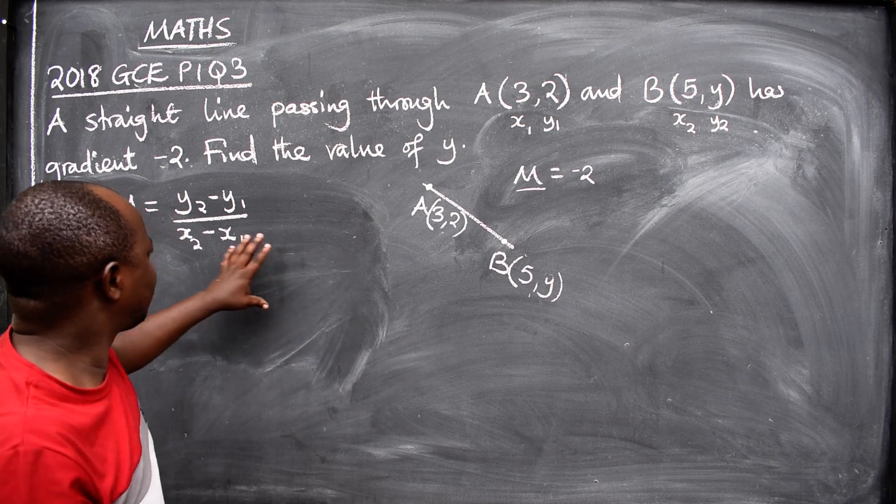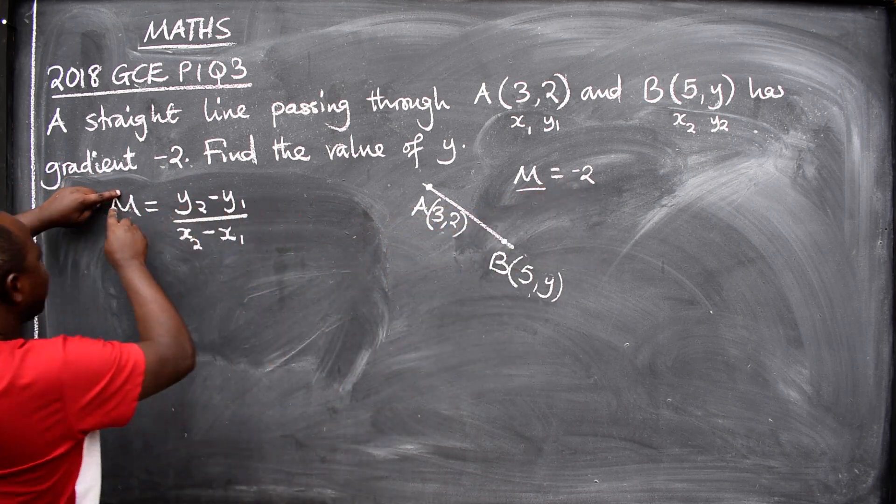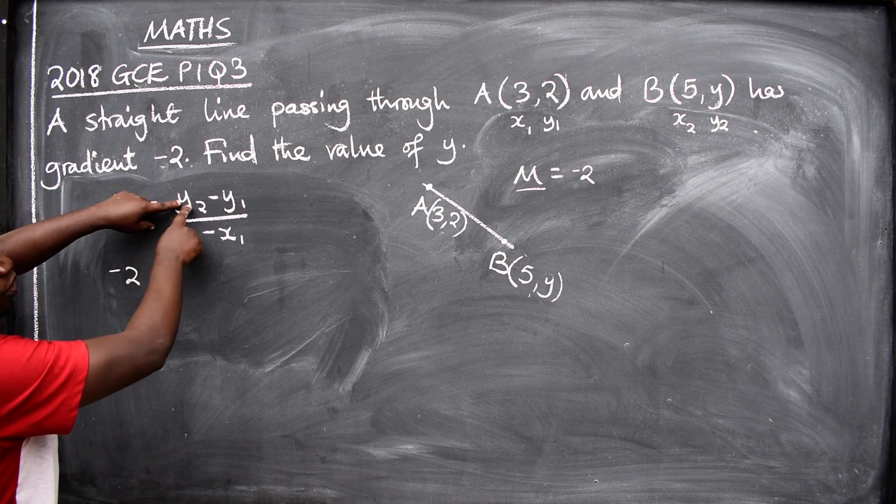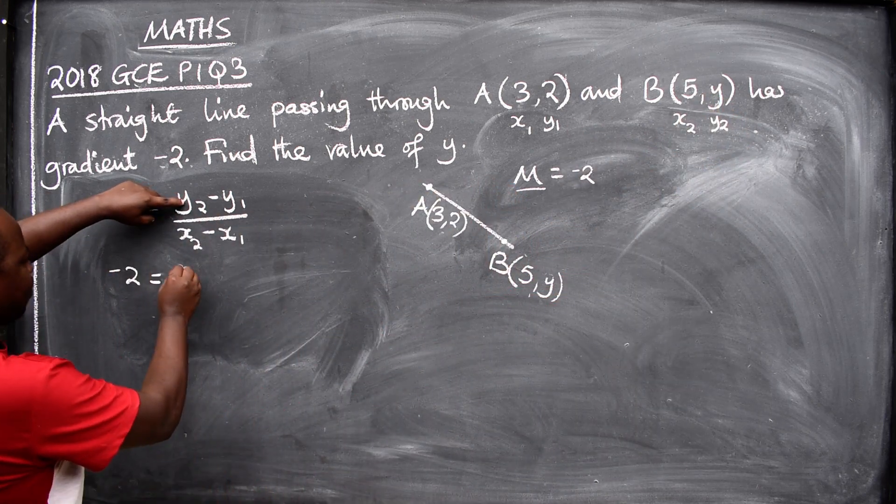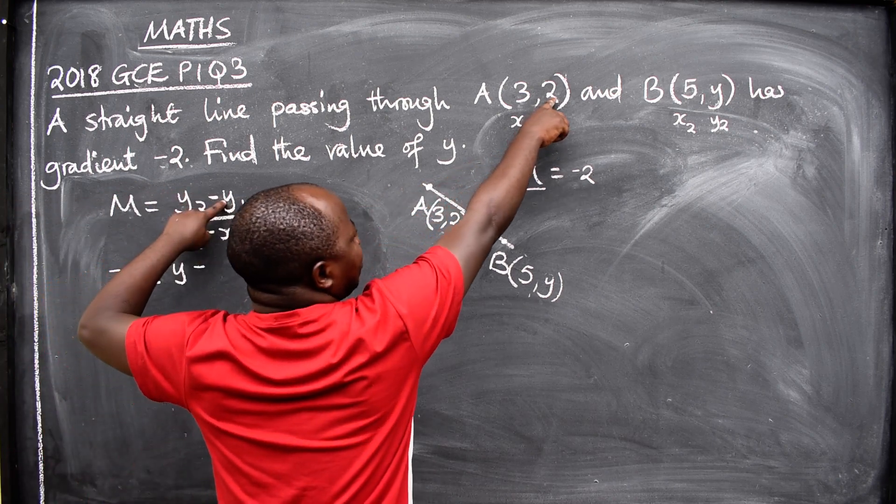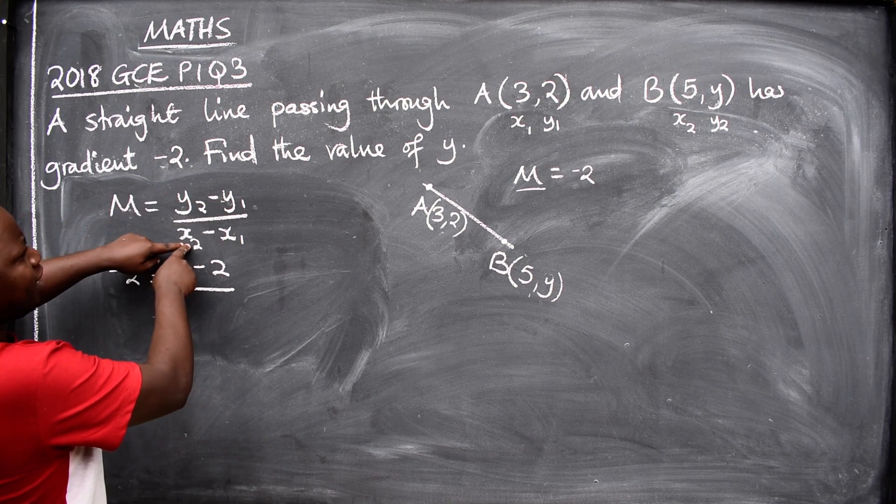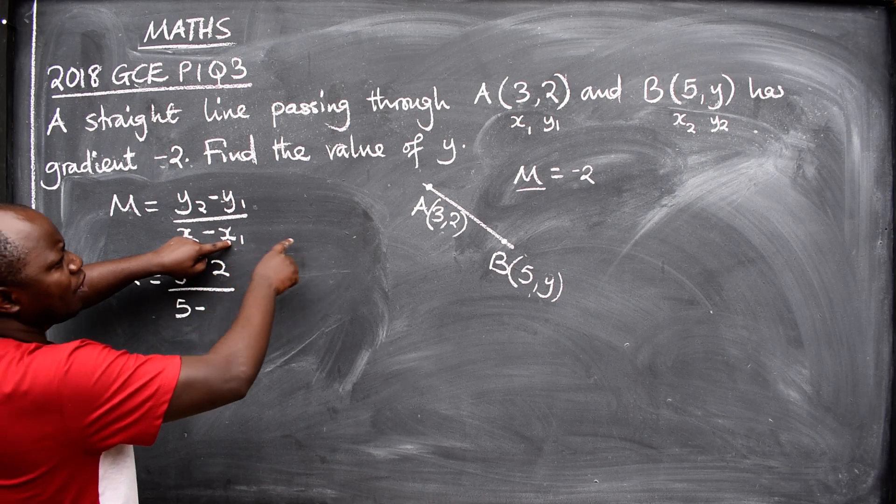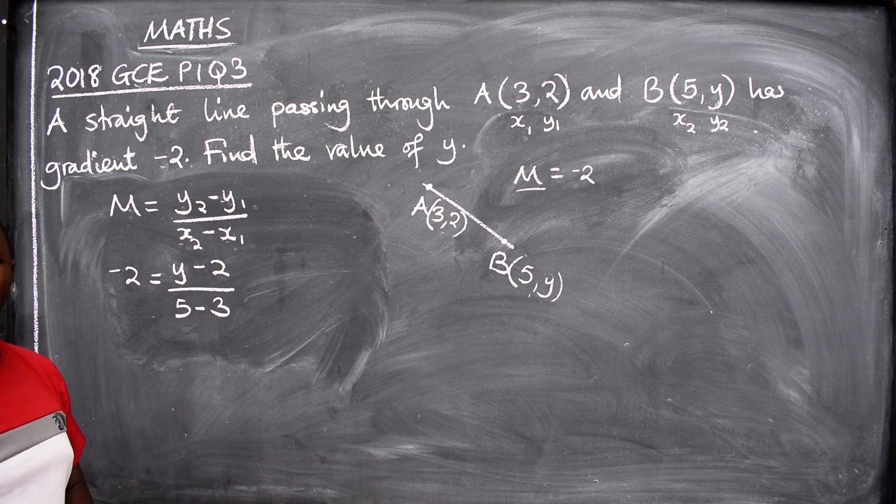Then we are now going to substitute. What is our m? Gradient is -2, so where there is m, put -2. -2 = y2. Which one is y2? It is y. So -2 = y minus y1. y1 is 2, so put 2 here, over x2. x2 is 5, minus x1. x1 is 3. That is the way you are going to substitute.